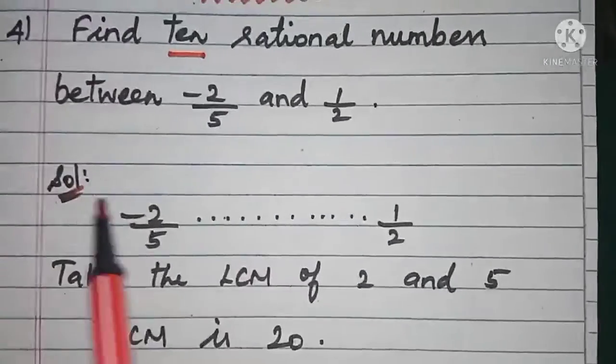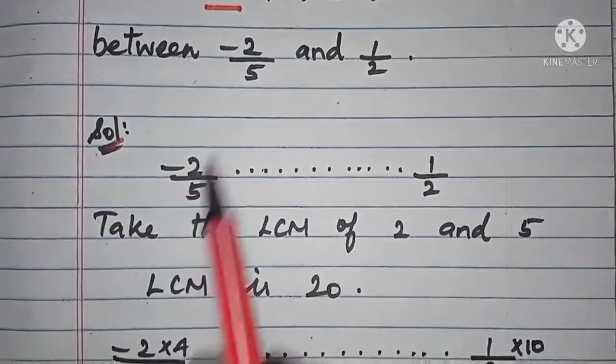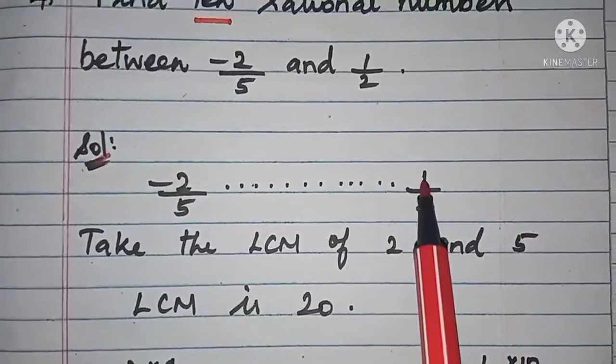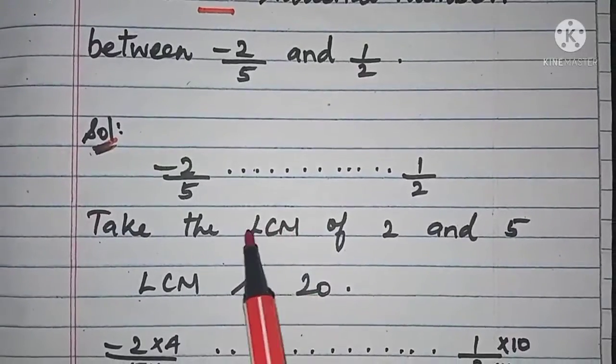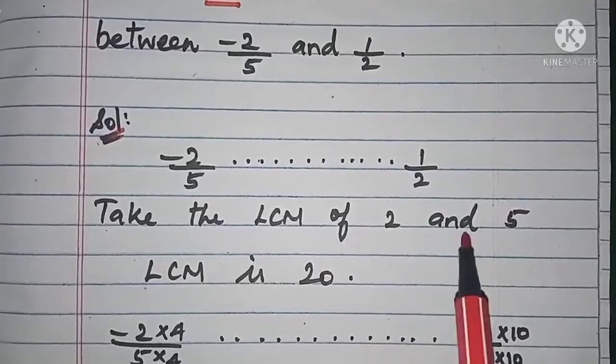First, we have to write the numbers like -2/5, in between dots, and the last number is 1/2. Here we are going to take the LCM of 2 and 5. The LCM is 20.